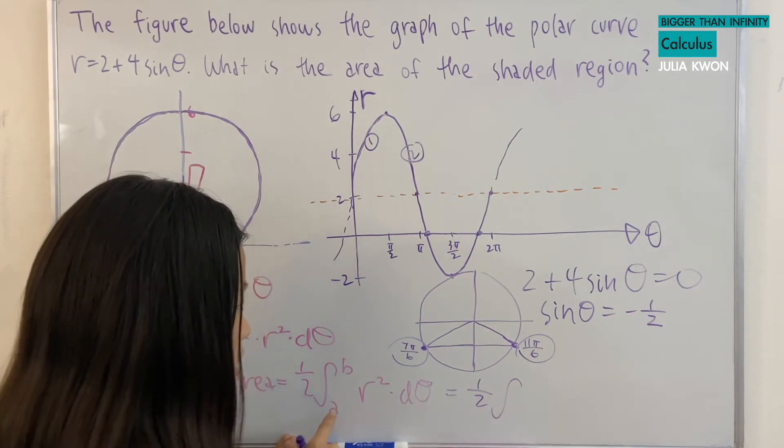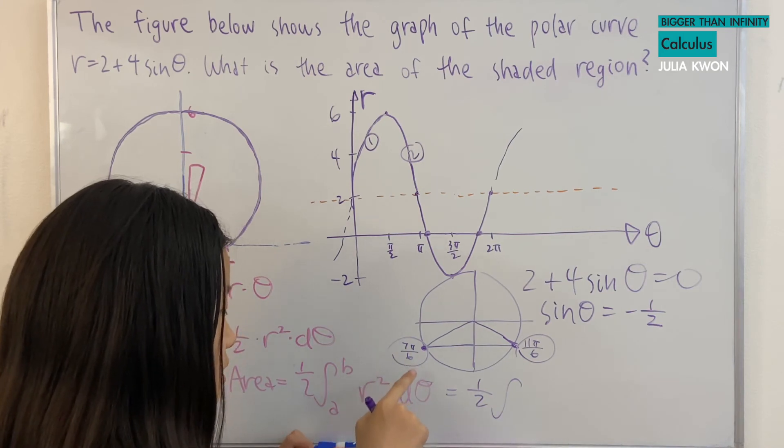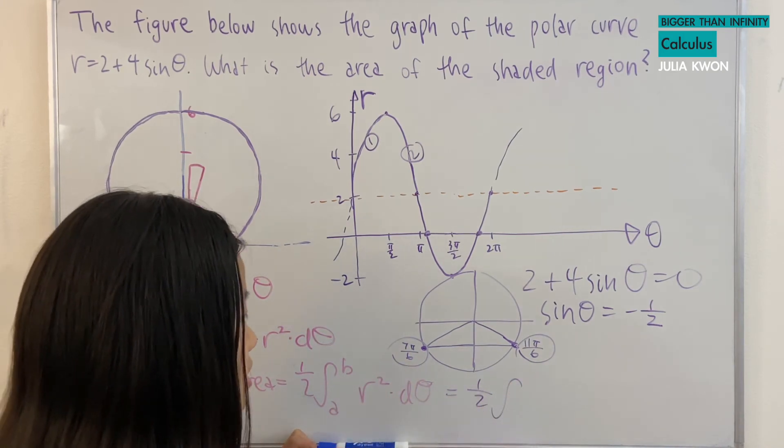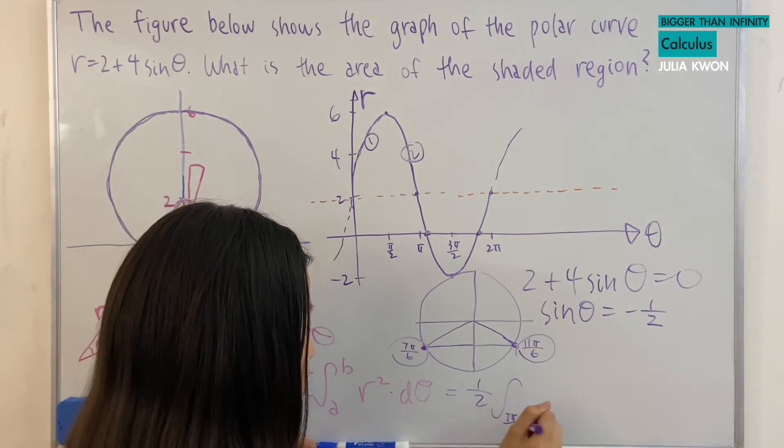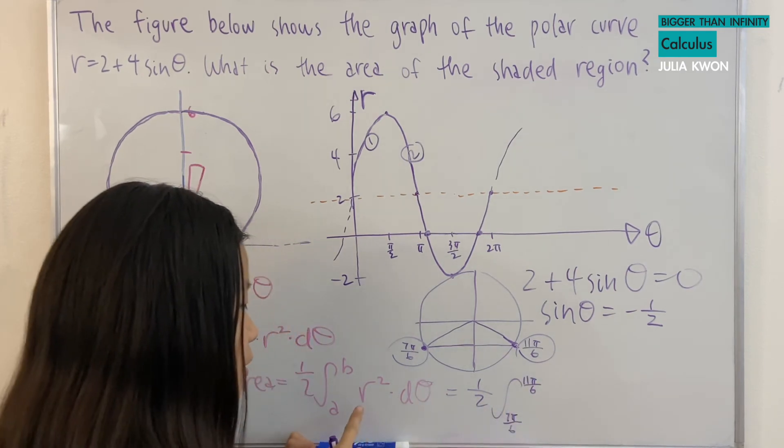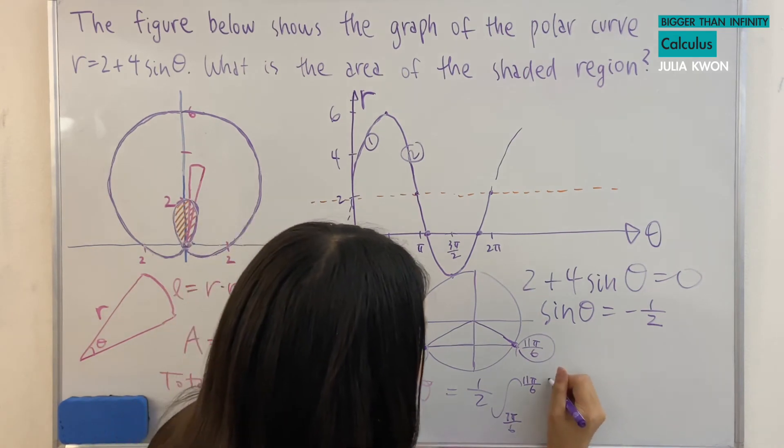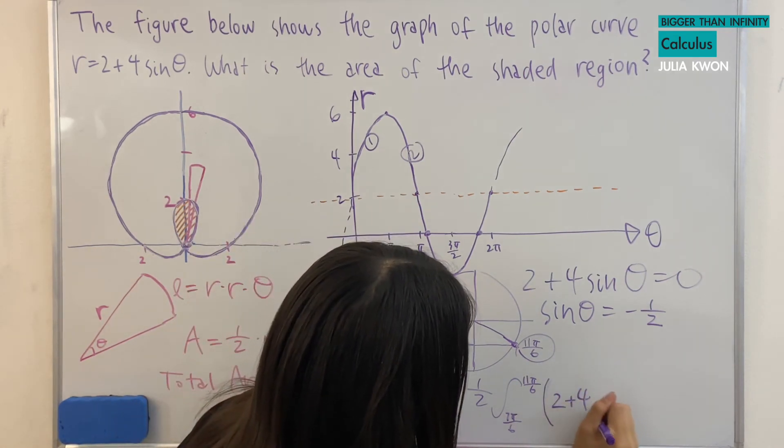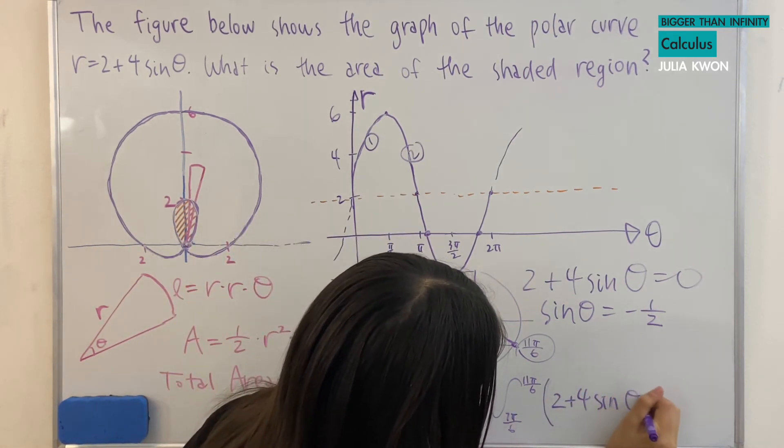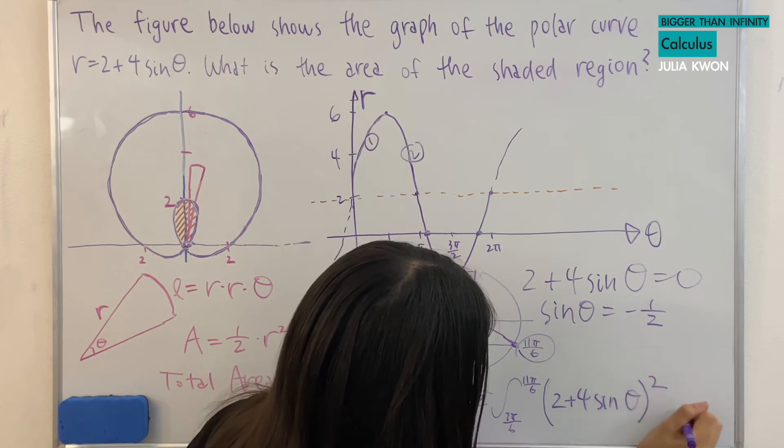Now if we just put it in, a equals 7 pi over 6 and b equals 11 pi over 6. And then we also put in the r, which is equal to 2 plus 4 times sine theta. And we square it.